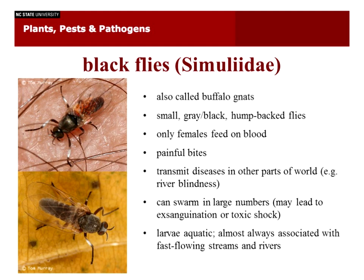The next group is black flies, also called buffalo gnats. I've gotten a couple of calls about these. They are small, gray-black, hump-backed flies. Only the females feed on blood, and they have very painful bites — they're the telmophagous type that slices the skin open and laps up the blood. In other parts of the world, especially Africa and South America, they can transmit a worm that causes river blindness. But here in the U.S., they're not going to be transmitting diseases.